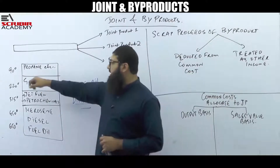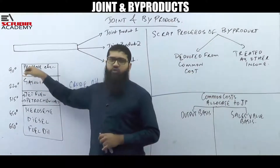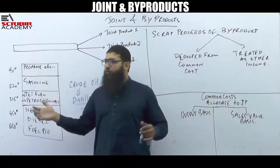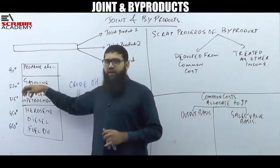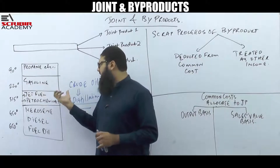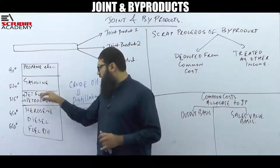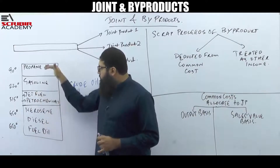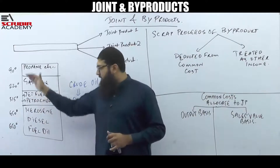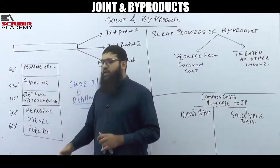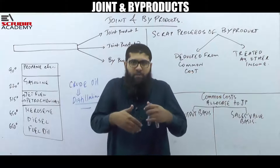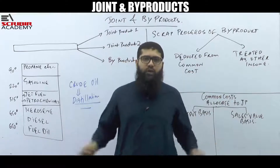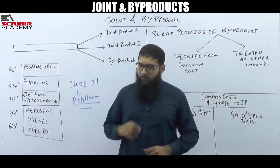Generally at 90°F you would get propane and butane; at 220°F you might get gasoline; at 315°F, so on and so forth. As the temperature goes up, the heavier products keep separating from the crude oil. This is an example of a single manufacturing process producing multiple products.